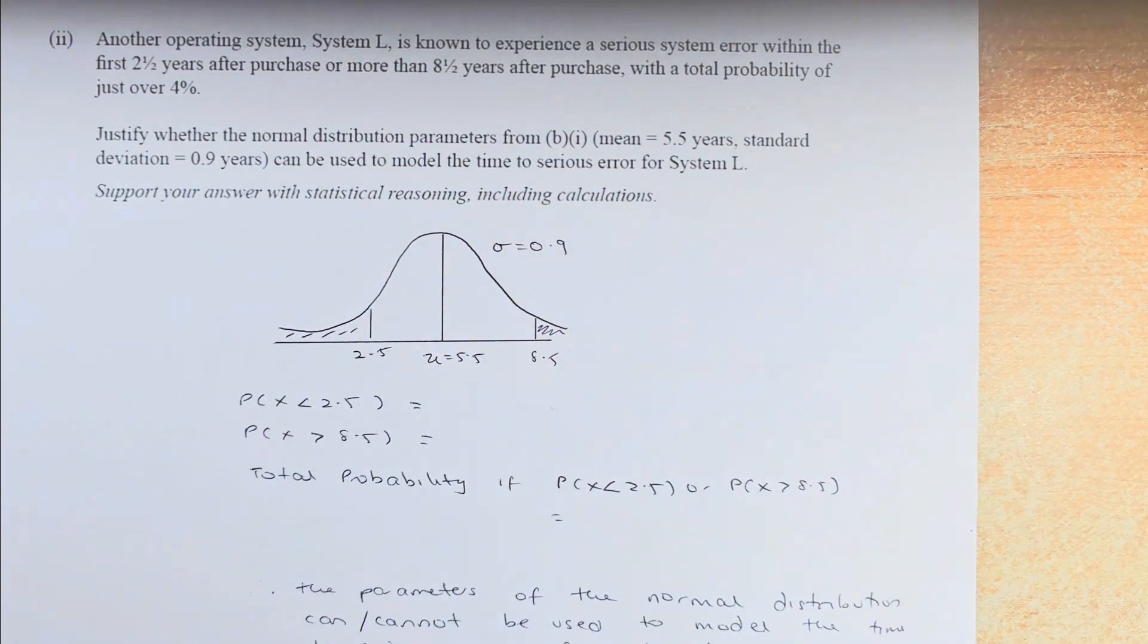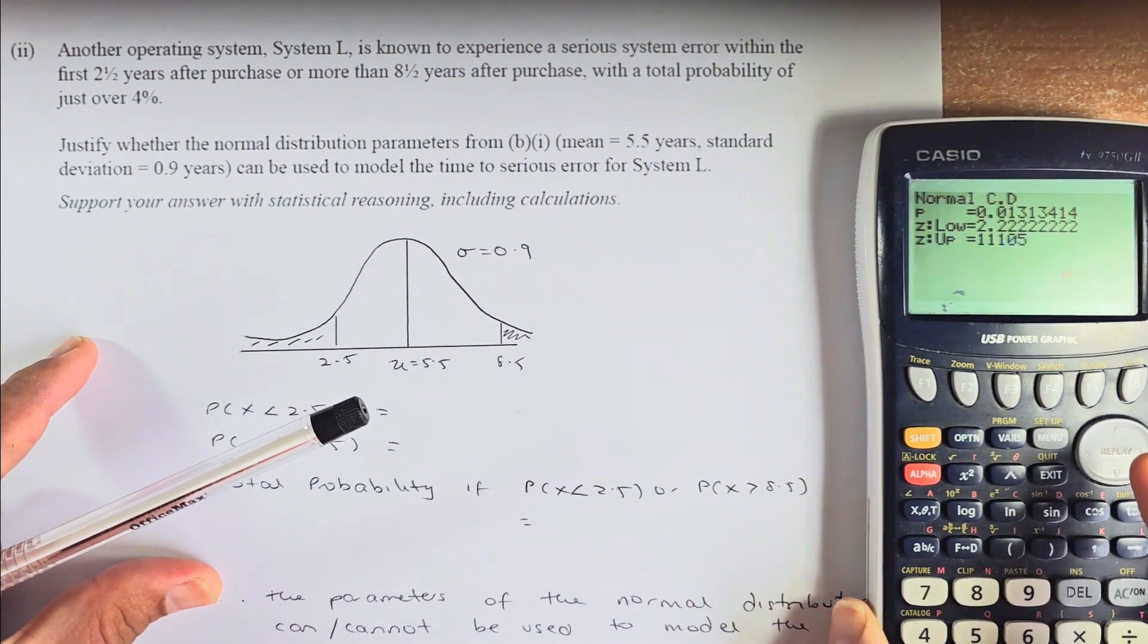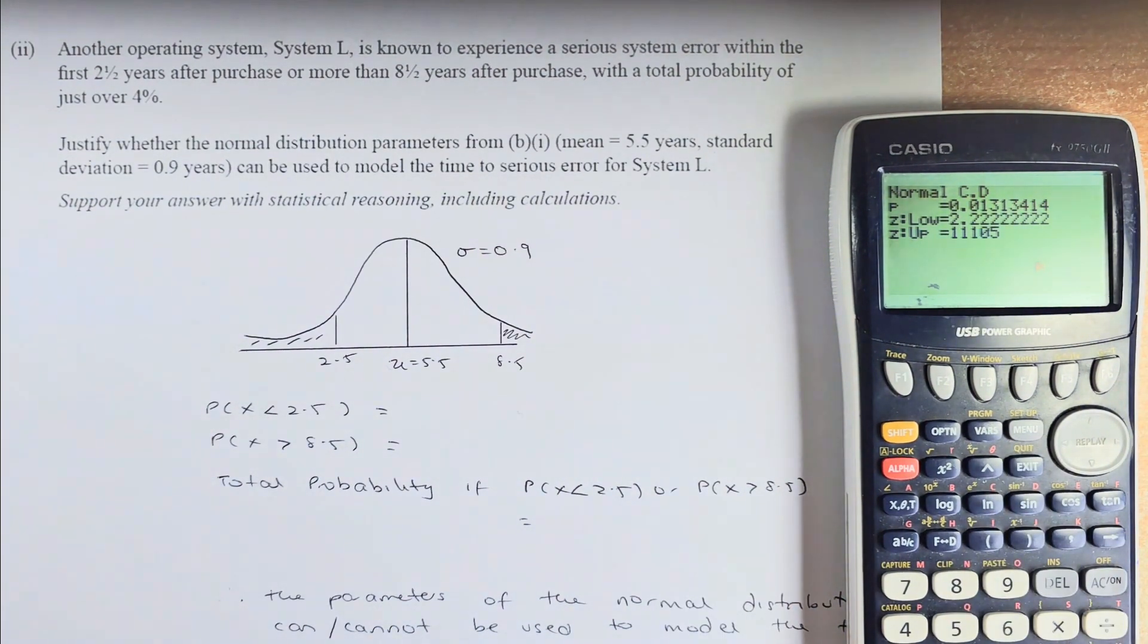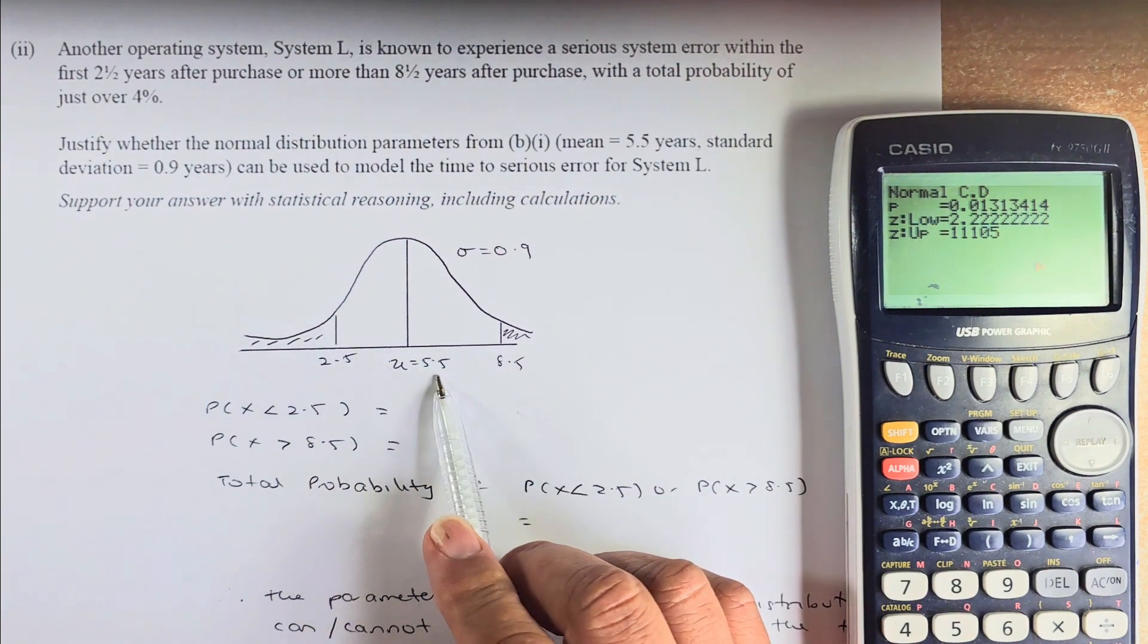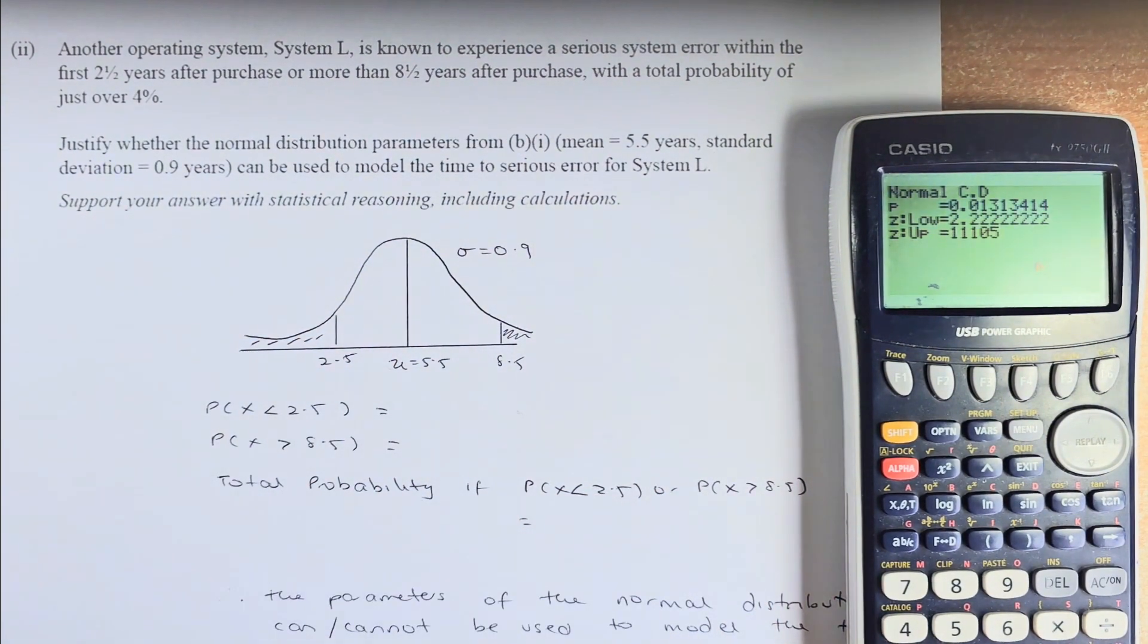Another operating system, L, is known to experience a serious error within the first 2.5 years after purchase or more than 8.5 years after purchase with a total probability of just over 4%. Justify whether the normal distribution parameters from part 1, that is the mean is 5.5, sigma is 0.9, can be used to model the system L. Support your answer with a statistical reason.